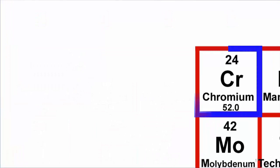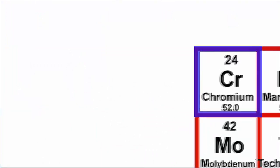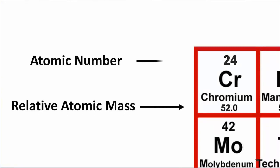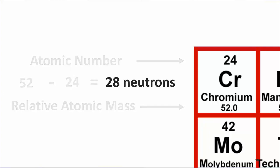What about chromium? The difference between its relative atomic mass and its atomic number is 52 minus 24 equals 28 neutrons.